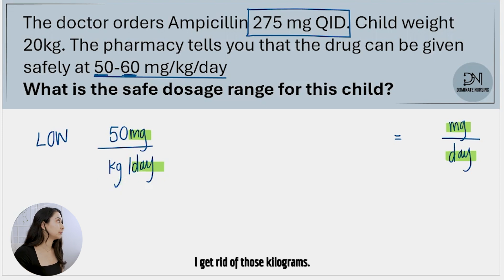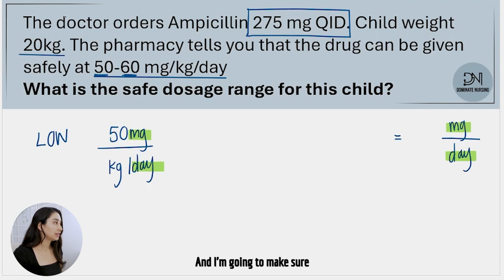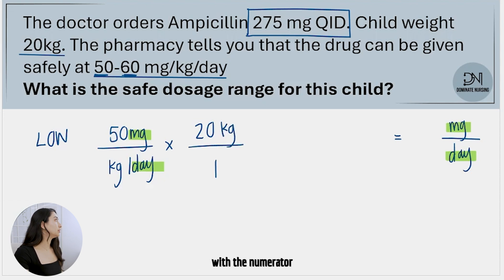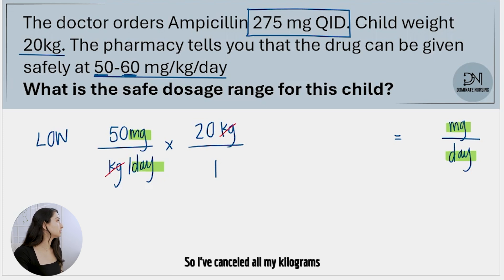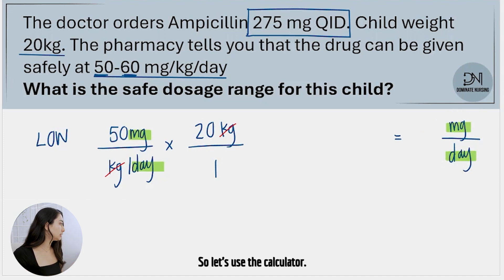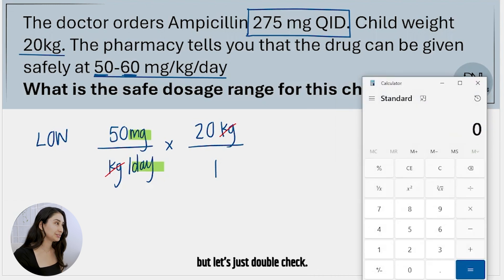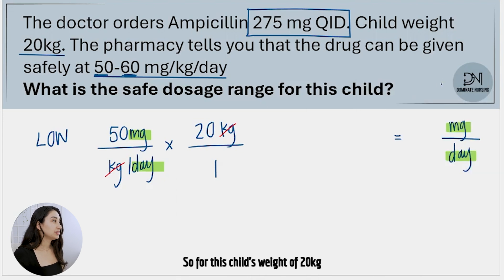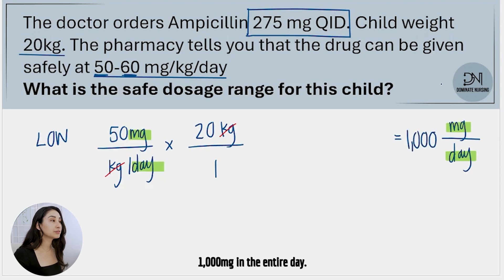I don't want kilograms — I need to get rid of them. To do that I can use the child's weight of 20 kilograms and put that in the numerator, so I can cancel out kilograms in the numerator with kilograms in the denominator. I've canceled out my kilograms and I'm left with only milligrams per day, which is what I want. Let's use the calculator: 20 times 50 gives us 1000. So for this child's weight of 20 kilograms, they need to get 1000 milligrams in the entire day.